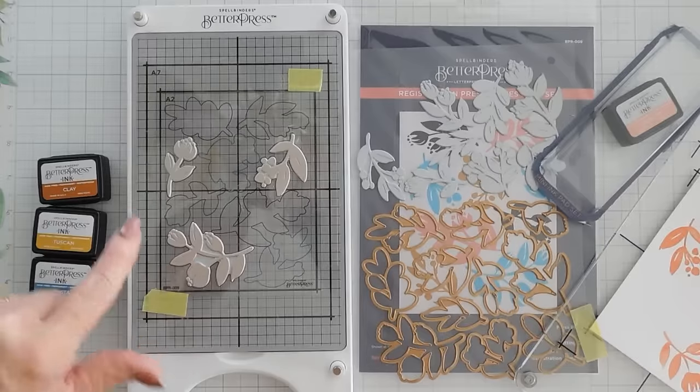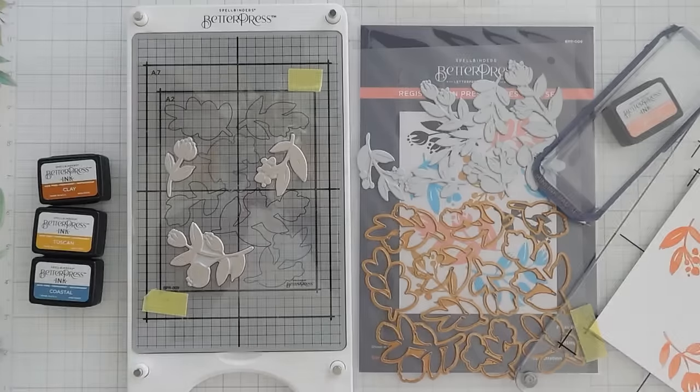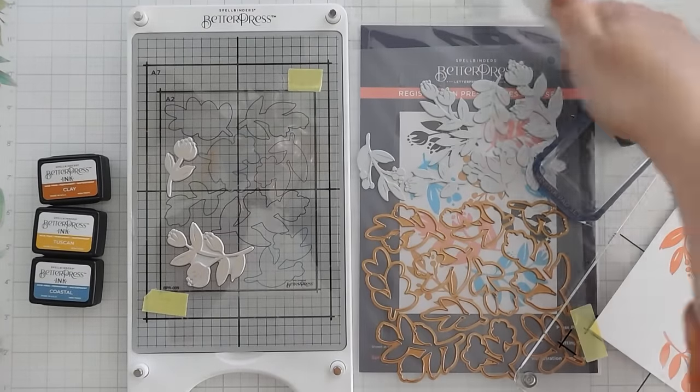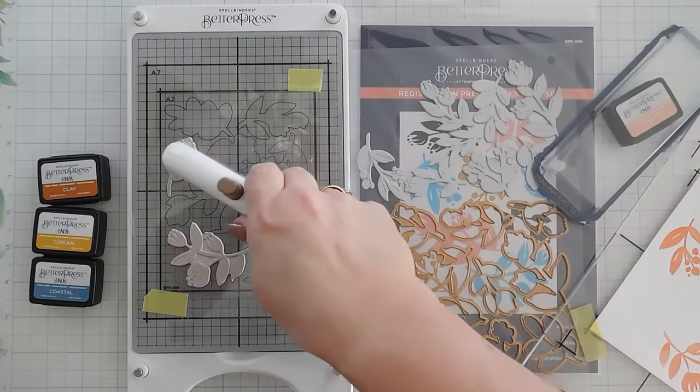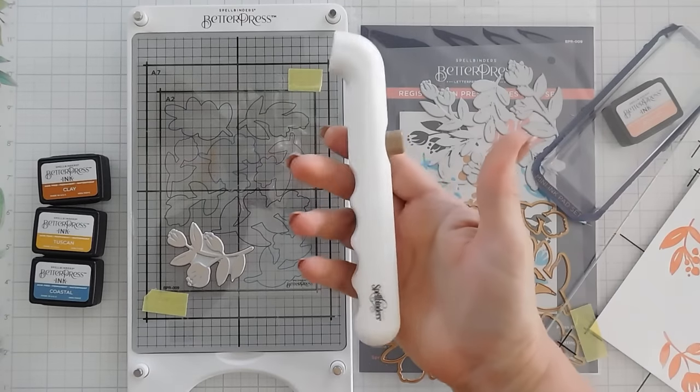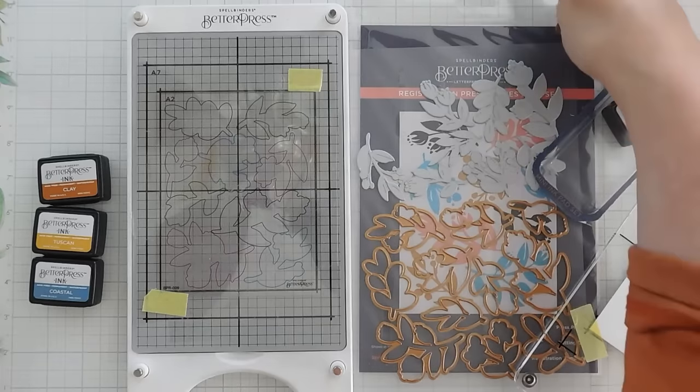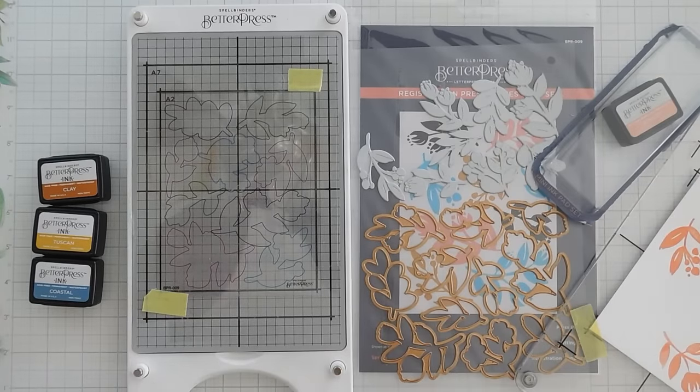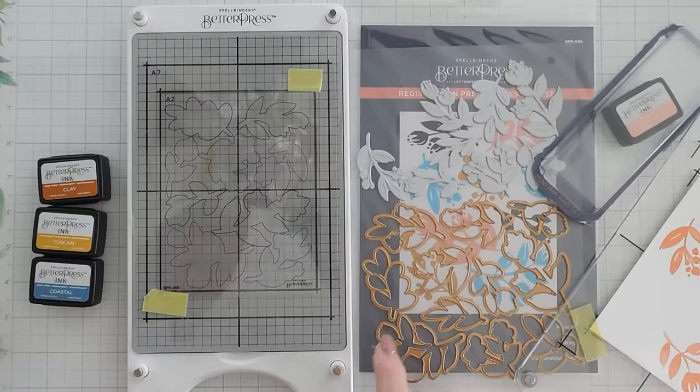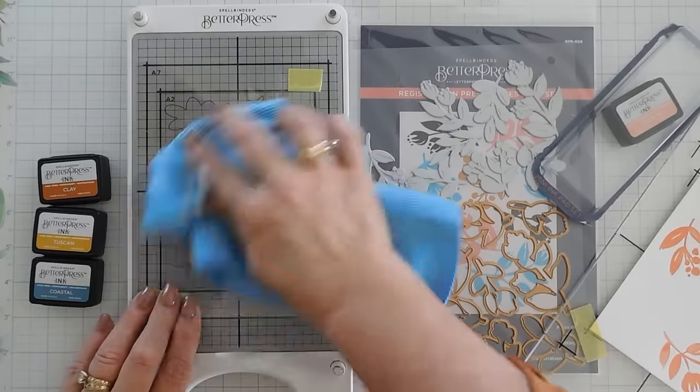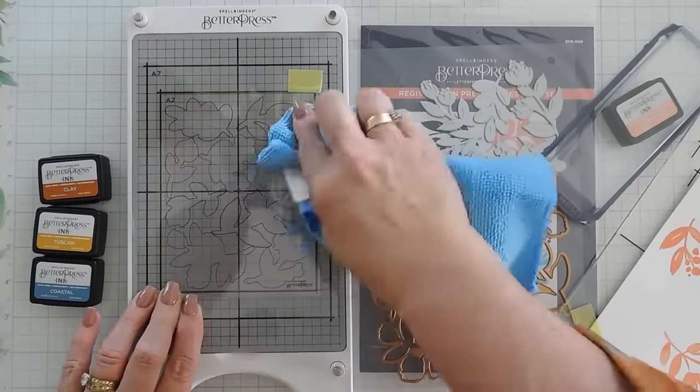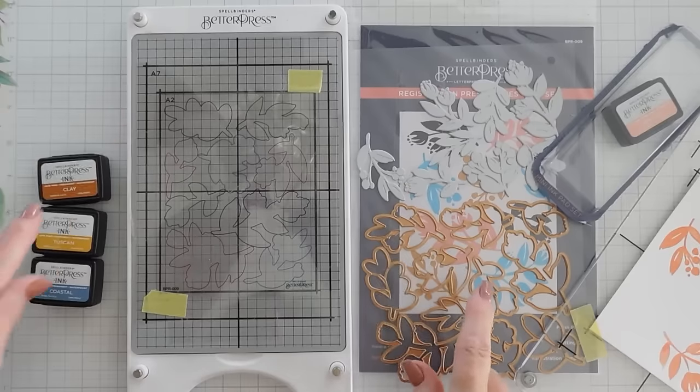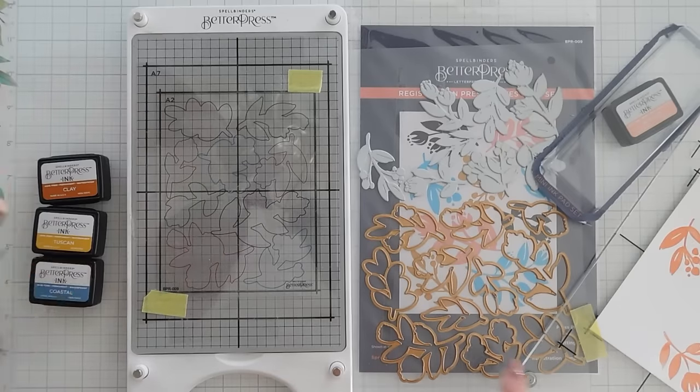I'm going to bring my magnetic tool. With the lighter press plates, you can actually use your magnetic tool, which is handy. If you get ink on here, you can always just wipe it off. With that's done, I'm going to wipe off my registration. And then we're going to go in with our next color, which will be purple. Let's do purple next.